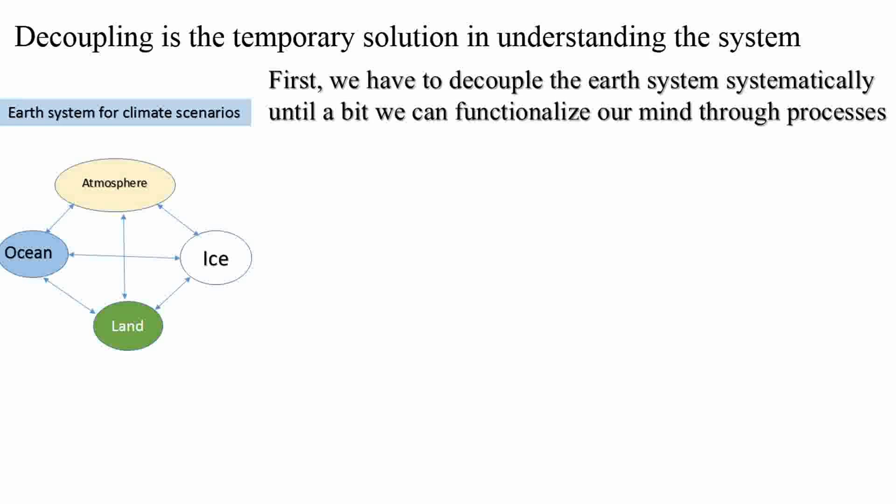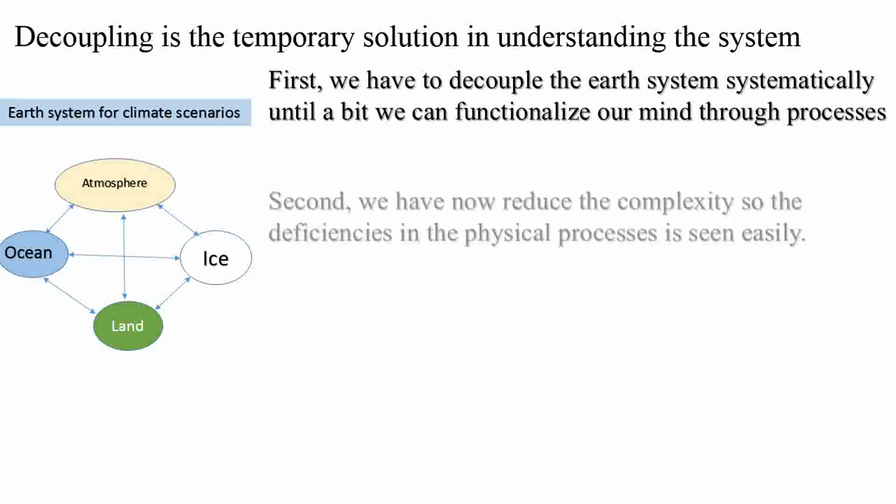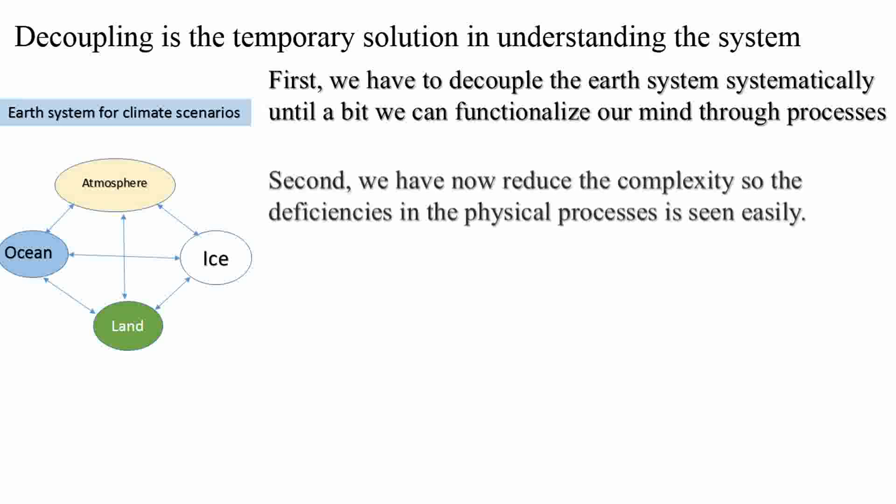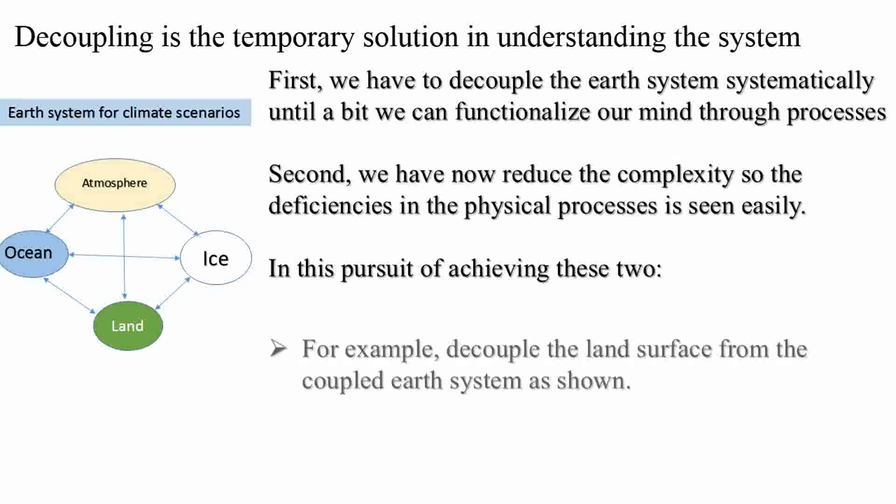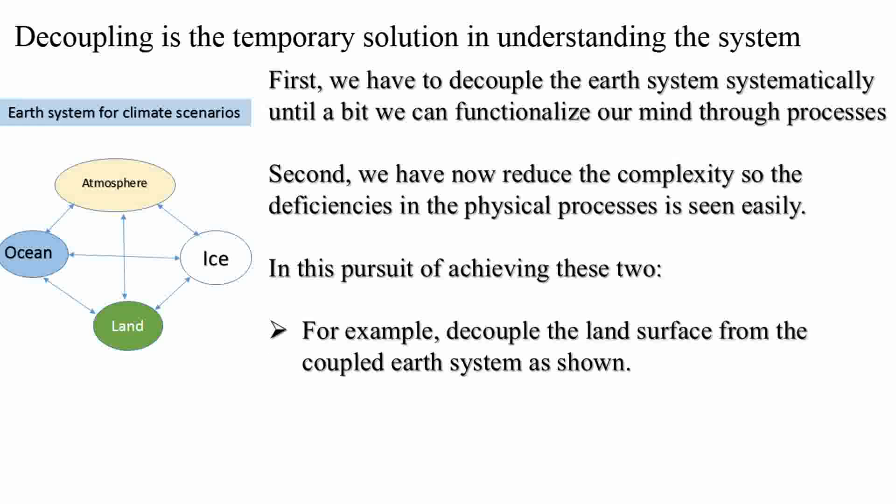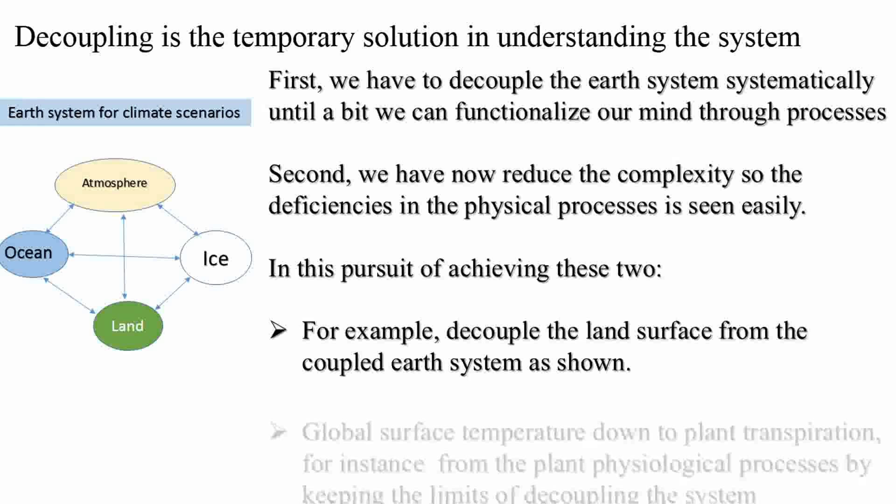First, we have to decouple the Earth system systematically until our mind can process the processes easily, but in a systematic way and keeping the limitations in mind. This decoupled system is simpler so that we can look into the processes embedded in the model and pick the faulty process or processes out by sensitivity experiments.